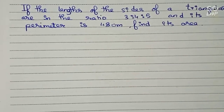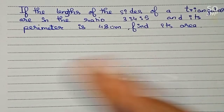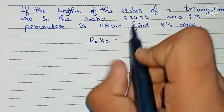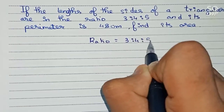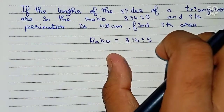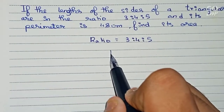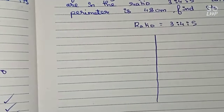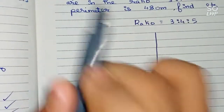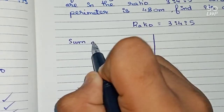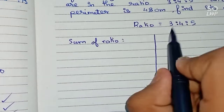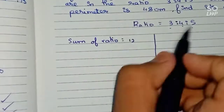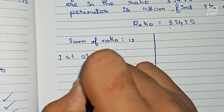To solve this question, first we find out the three sides of the triangle. The ratio given is 3:4:5. We can use two formula processes to find out the sides. In the first process, you find out the sum of the ratios: 3 plus 4 plus 5 equals 12.